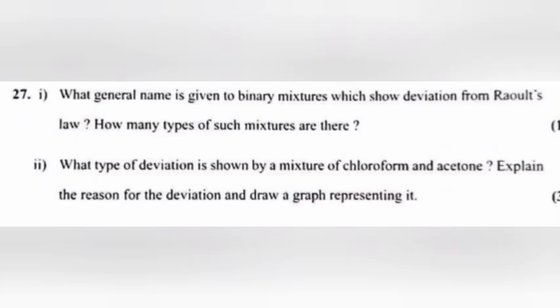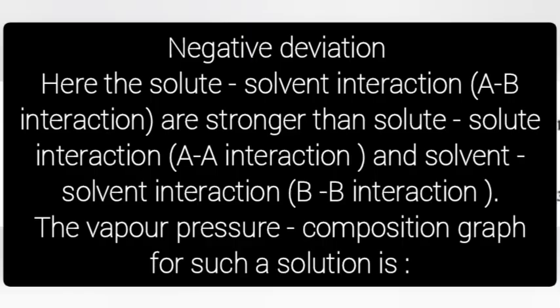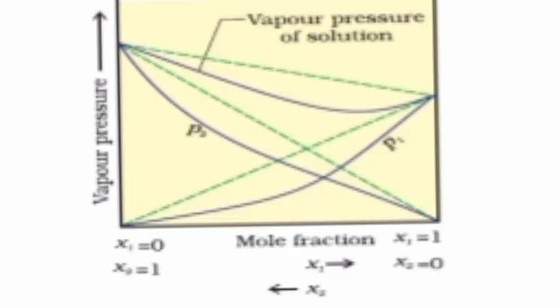Question 27.1: What general name is given to binary mixtures which show deviation from Raoult's law? How many types of such mixtures are there? Answer: Non-ideal solutions. There are two types of non-ideal solutions. 27.2: What type of deviation is shown by a mixture of chloroform and acetone? Explain the reason and draw a graph. Answer: Negative deviation. Here, the solute-solvent (A-B) interactions are stronger than solute-solute (A-A) and solvent-solvent (B-B) interactions. The vapor pressure-composition graph for such a solution is shown.